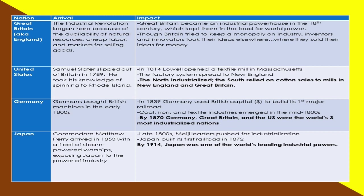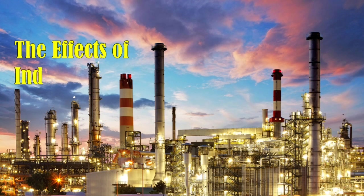In Germany, Germans bought British machines in the early 1800s. In 1839, Germany used British capital to build its first major railroad. Coal, iron, and textile industries emerged in the mid-1800s. By 1870, Germany, Great Britain, and the United States were the world's three most industrialized nations. In Japan, Commodore Matthew Perry arrived in 1853 with a fleet of steam-powered warships, exposing Japan to the power of industry. By the late 1800s, Meiji leaders pushed for industrialization. Japan built its first railroad in 1872, and by 1914, Japan was one of the world's leading industrial powers.